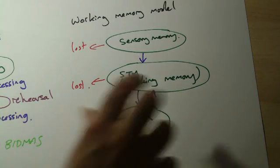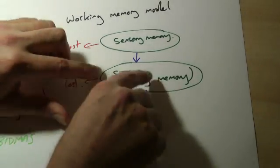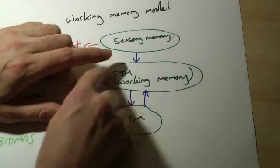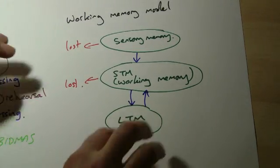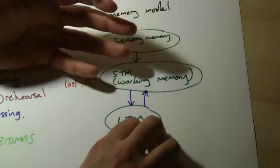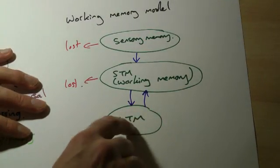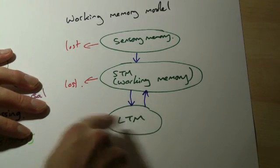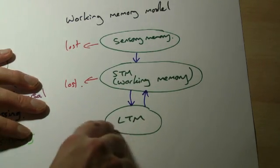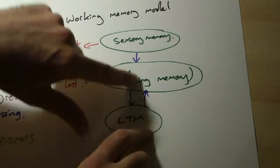But the suggestion here is that a long-term memory now working memory, this is the bit where we do the thinking. So if I were to say to you, for example, what is 7 times 16, you would go to your long-term memory and recall the information on how to multiply numbers together. You might remember, for example, times tables.